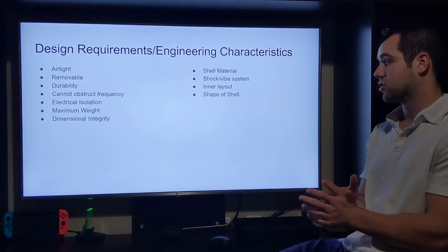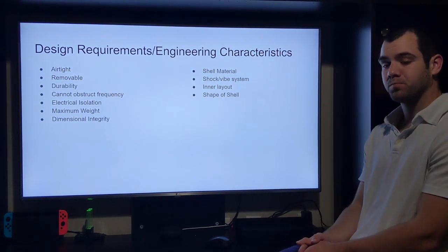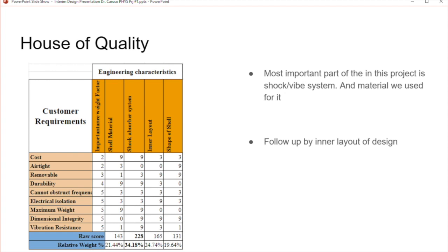This is half of the quality table that we made based off the previous slide. Here it fills up with all the customer requirements and the engineering characteristics that we select. As we can see that shock vibe system is the most important factor to our design, and then followed up by the inner layout of the design.